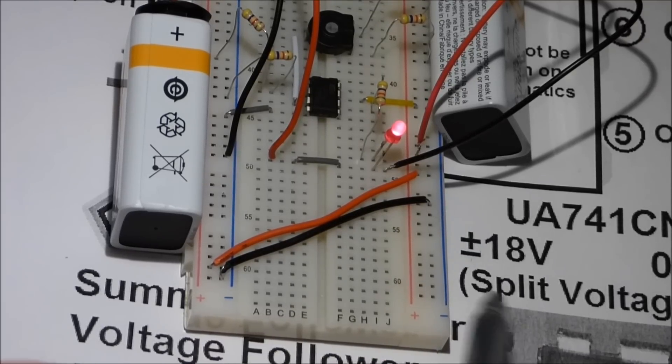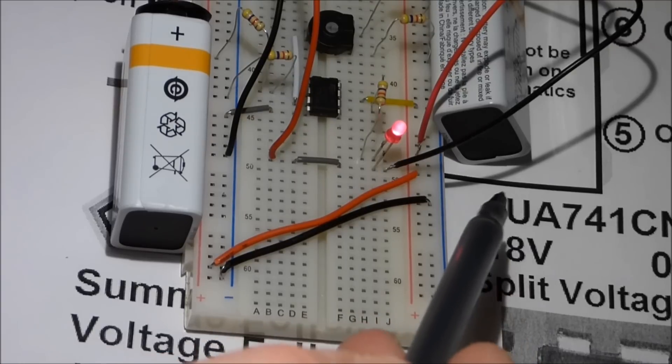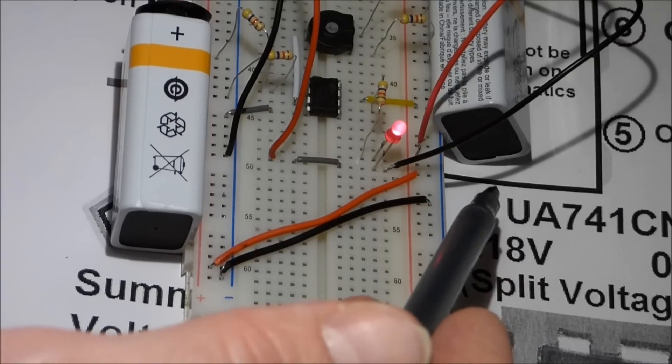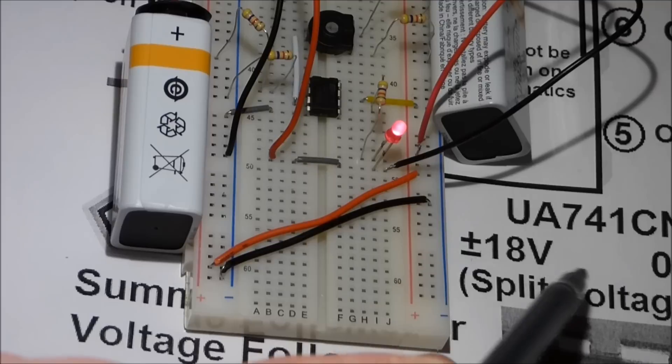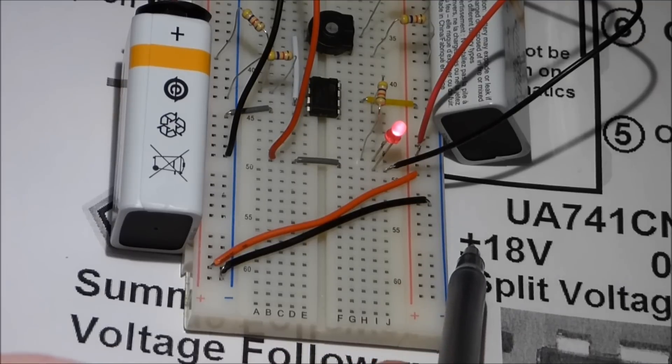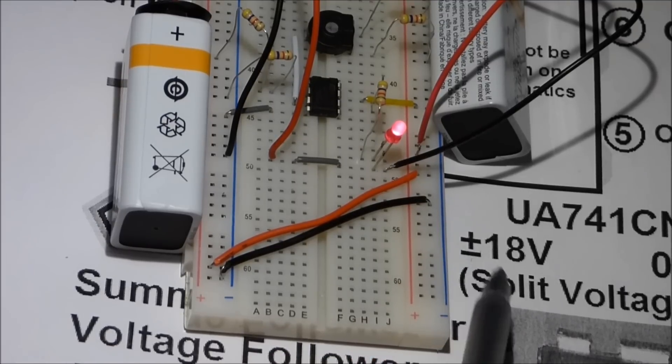But if you only need one battery, such as with like the 555 timer, then it should just say single. And stuff will just be identified with either a plus or a minus.